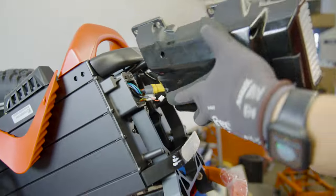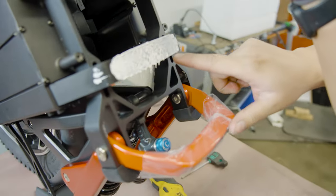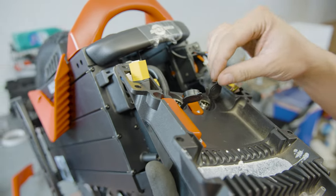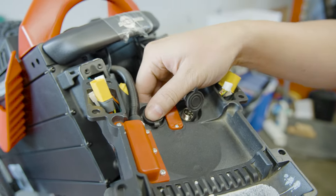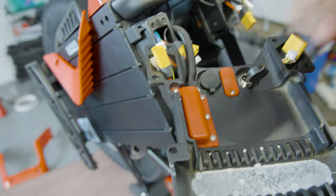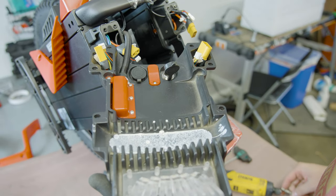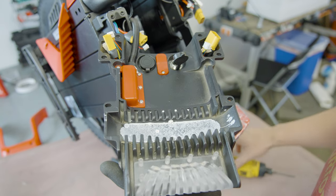We'll flip this over. So there is some thermal grease here. Just be careful it does kind of get a little messy if you grab your hand on it. So now you'll see these four screws here. Take our screwdriver again, Phillips, and remove these.